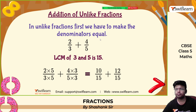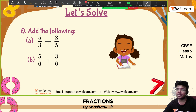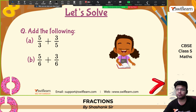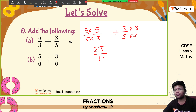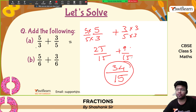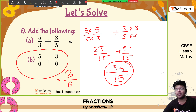Solve the following: denominators are 3 and 5, LCM is 15. Write as 5 by 3 multiplied by 5, plus 3 by 5 multiplied by 3. This gives 25 by 15 plus 9 by 15. Denominators are the same: 25 plus 9 is 34. So 34 by 15 is the answer. For another problem where denominators are the same: the answer is 8 by 6, which simplifies to 4 by 3.